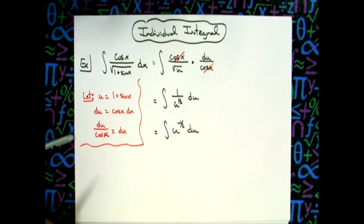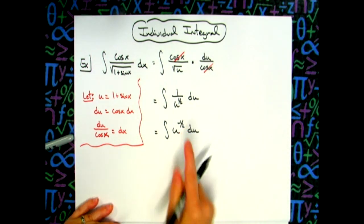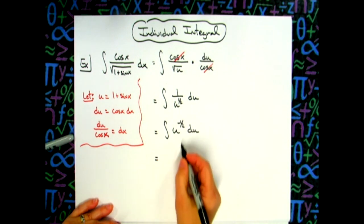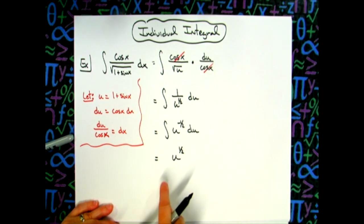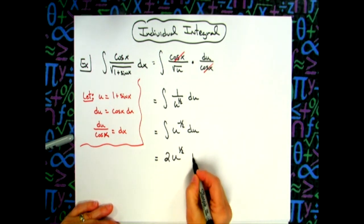When I add one to that negative one half there, I'm going to have u raised to the one half power, keeping in mind that we flip it. So it'll be a two there in front and then plus c.